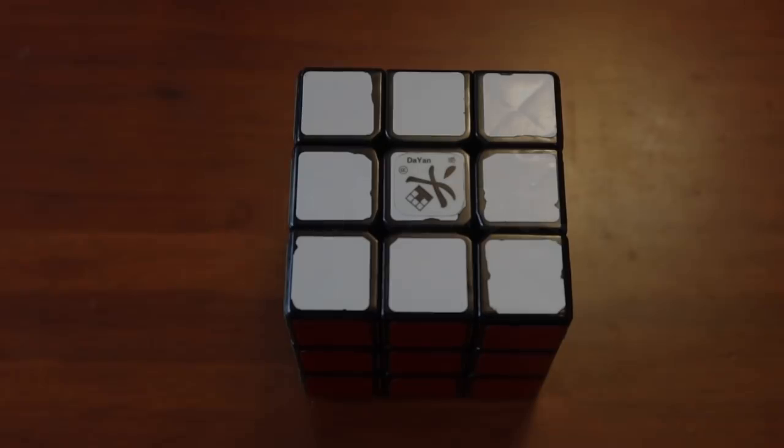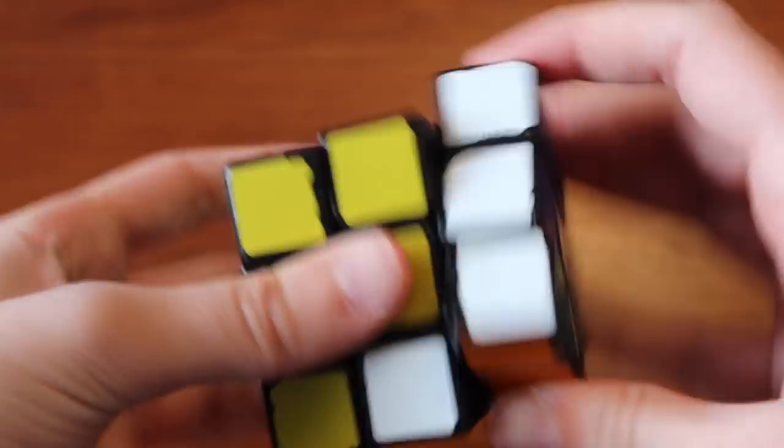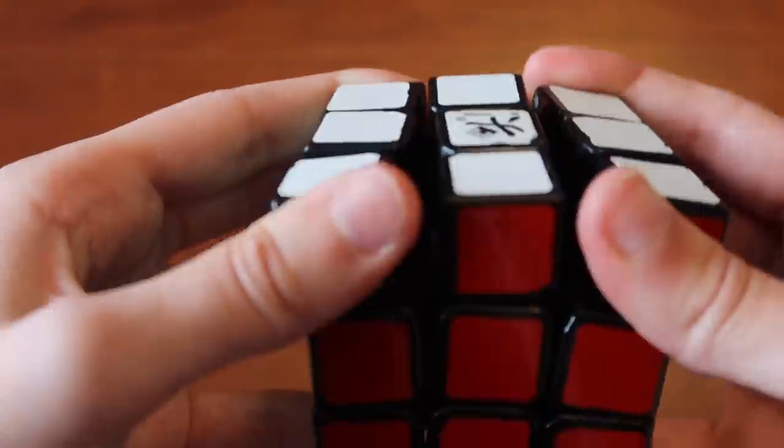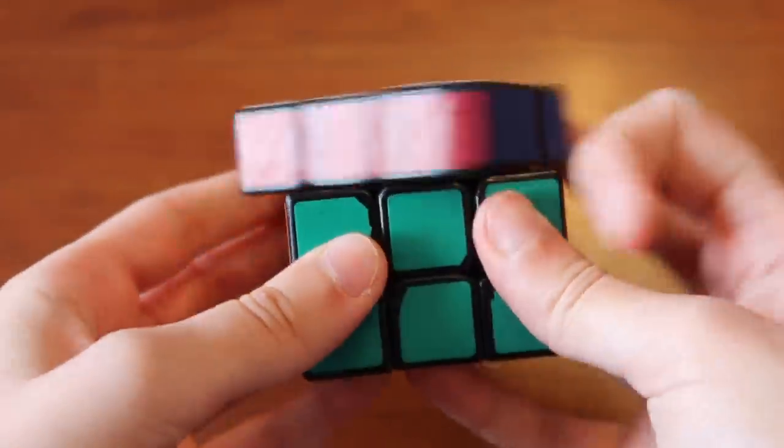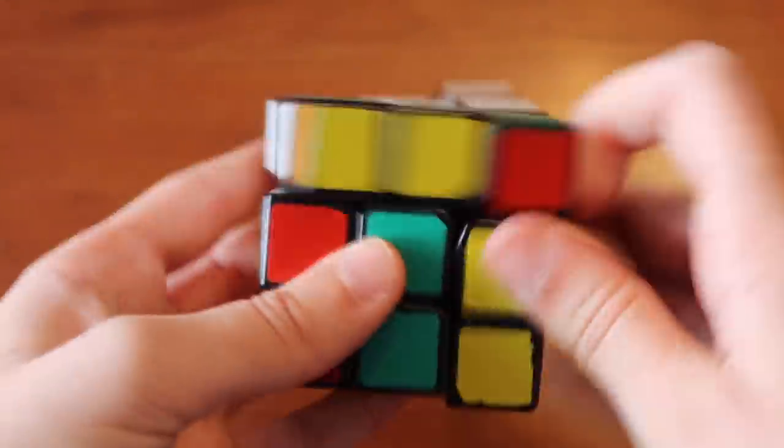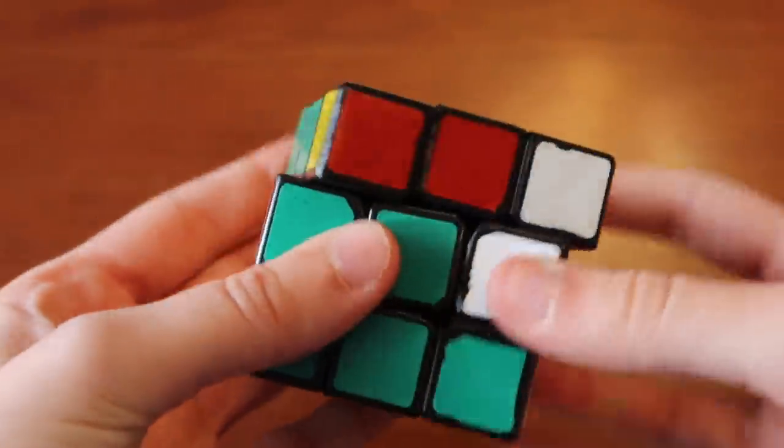Now before we end this video I have a few special awards. First up we have an award for the worst setup which goes to this Diane Guhong version 2. This cube was inadvertently lubed with shampoo giving it a very weird feeling. The cube is super loose but it feels kind of tight and dry and sticky almost. It's just really a weird feeling. Very hard to turn. Would not recommend lubing your cubes with shampoo.